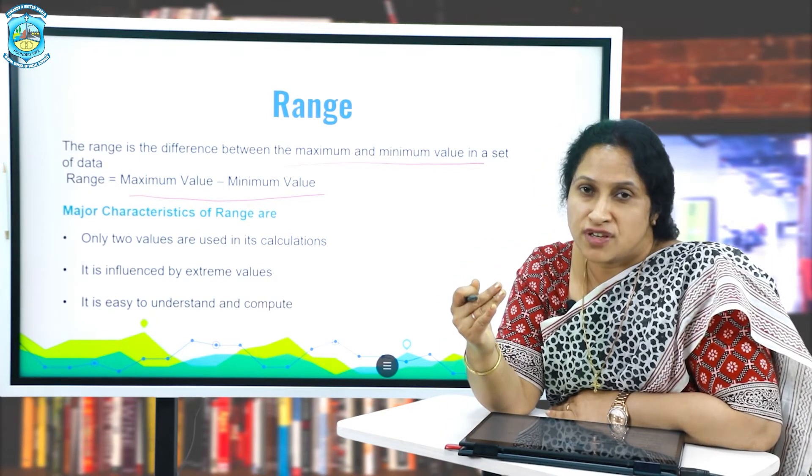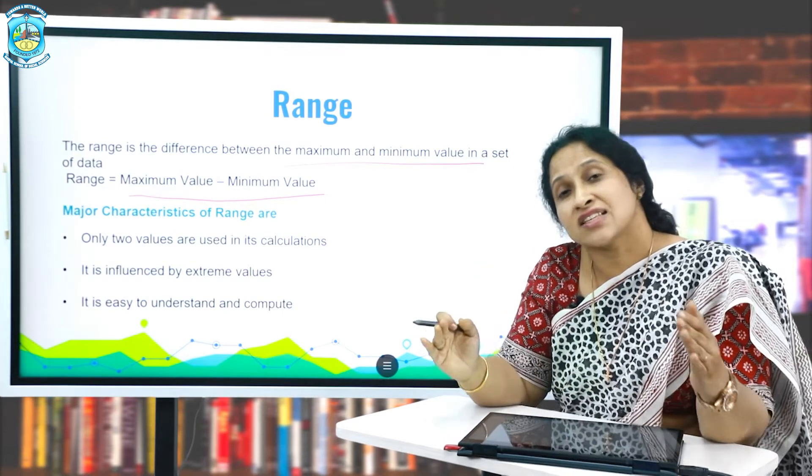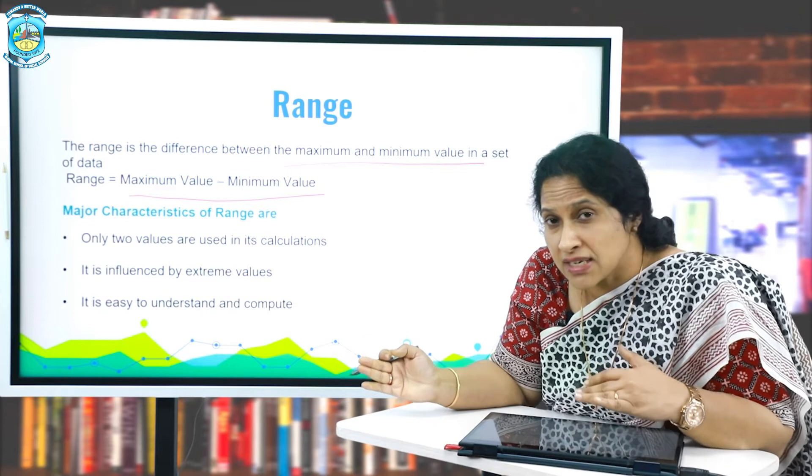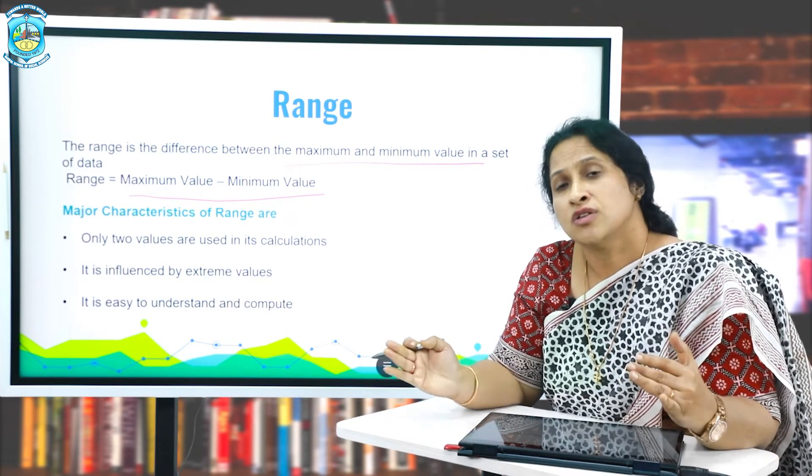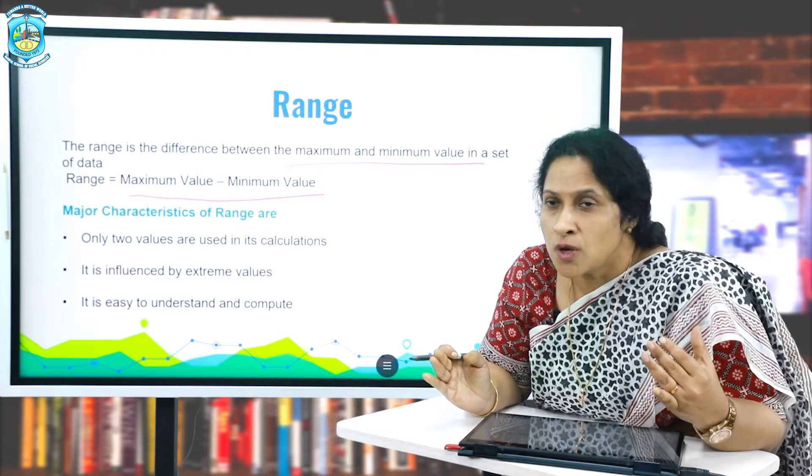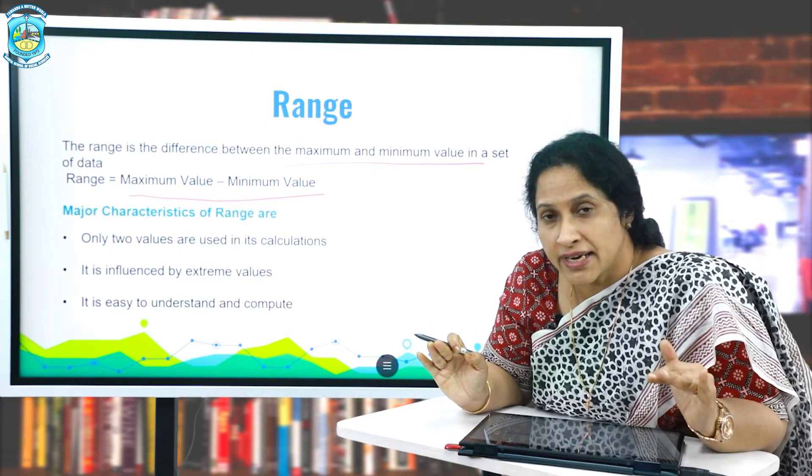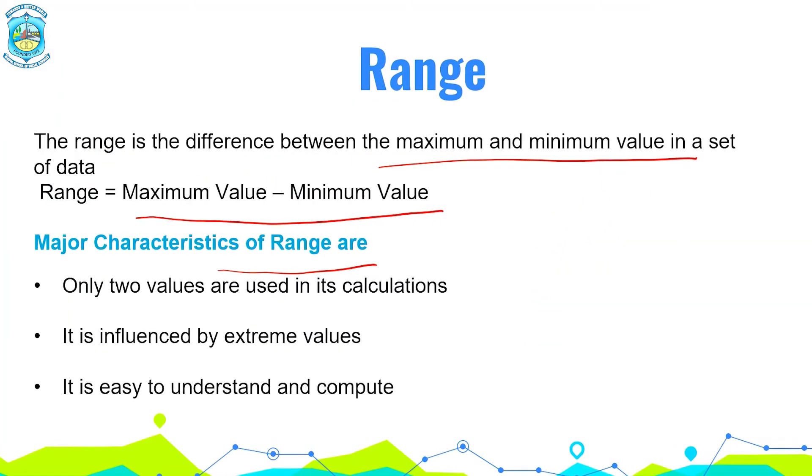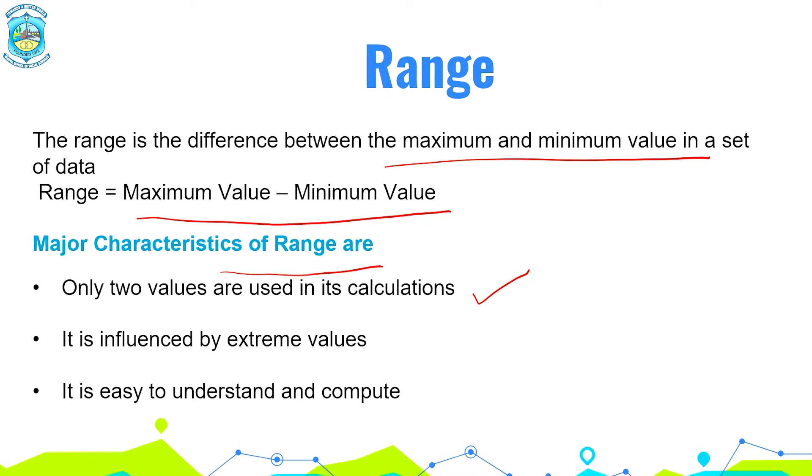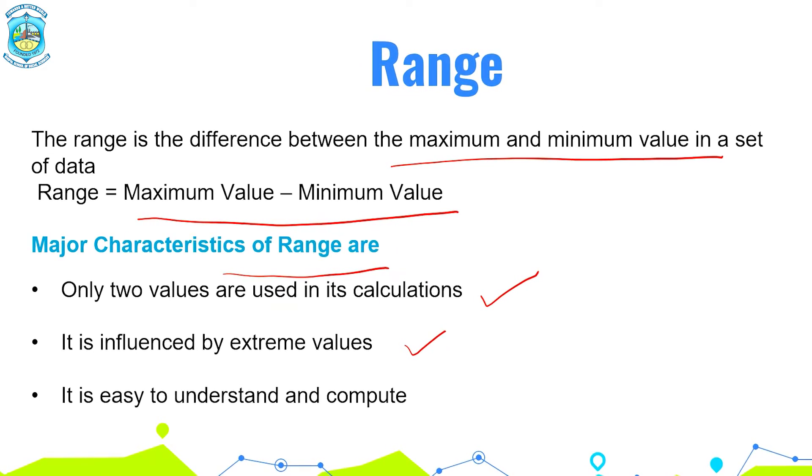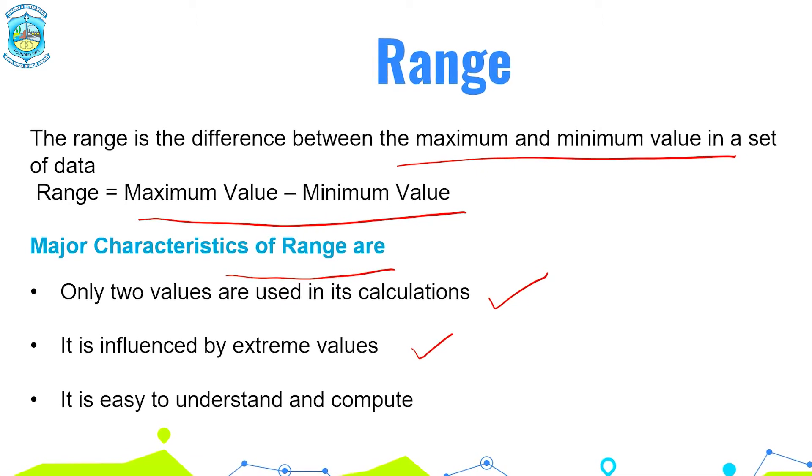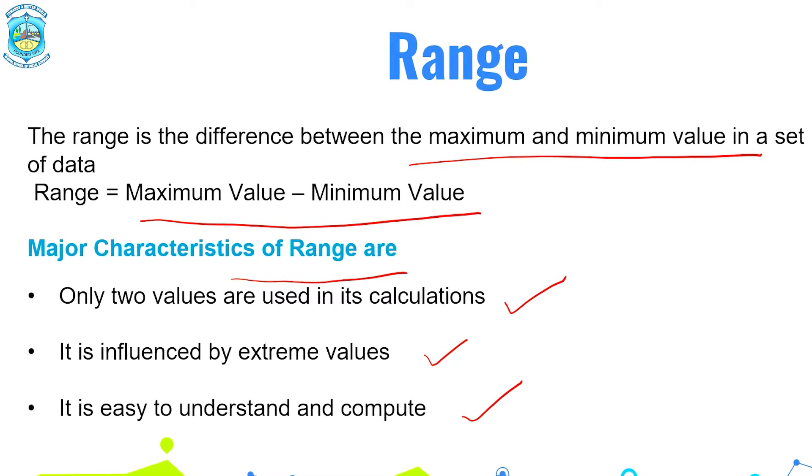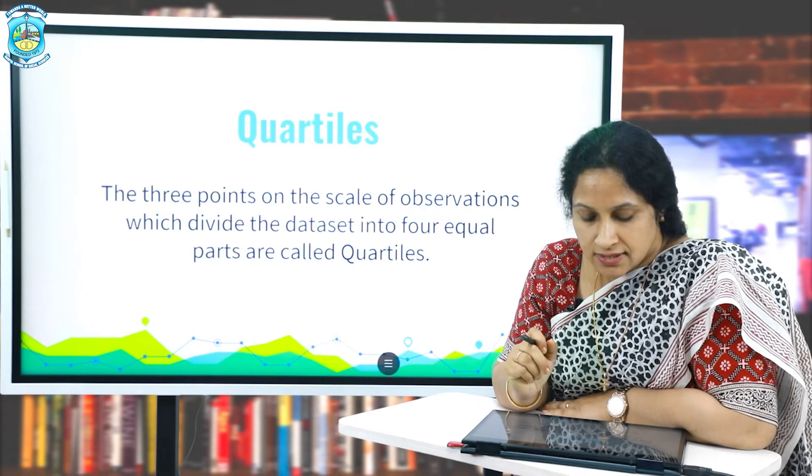So along with the average information, we need to have the understanding of extreme data points so that at least we are able to calculate the range. At least we will be able to calculate what is the maximum value here. Suppose if it is seven feet and the minimum is one, so seven minus one is six feet. And no person in his appropriate mind would take the decision of crossing the river with this understanding. So major characteristics of range are: only two values are used in this calculation, which makes it very easy. It is influenced by extreme values, two extreme values, the highest and the lowest. And the third and the best part of it, it is easy to understand and compute.